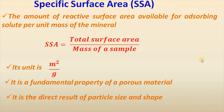Specific surface area is the amount of reactive surface area available for absorbing solute per unit mass of the mineral. It can be defined as: specific surface area equals total surface area divided by mass of a sample, and its unit is meter square per gram.